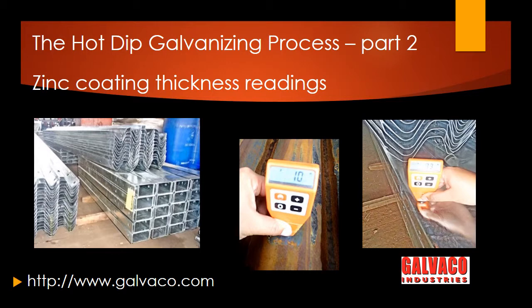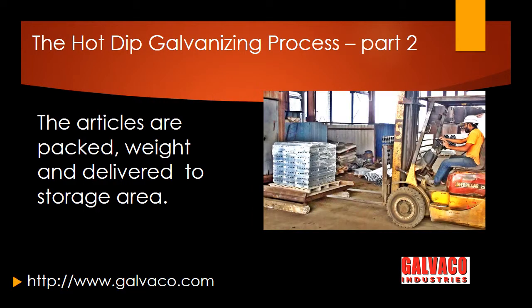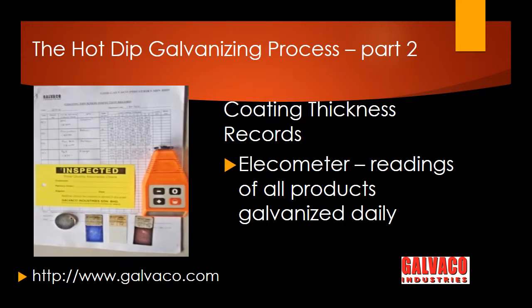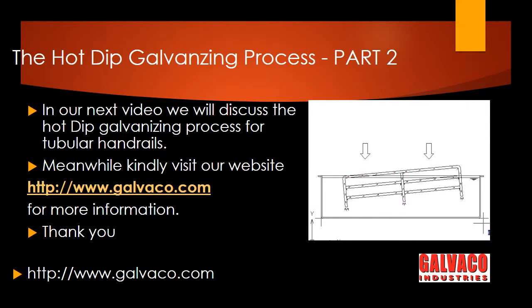After quality check, the articles are stacked and packed. A quality assurance officer checks and records the coating thickness, comparing the readings with tables 2 and 3 mentioned earlier. A yellow inspected tag is attached to the article and the final galvanized weights are recorded. The coating thickness records are kept for the issue of a galvanizing certificate, which is provided on the customer's request.